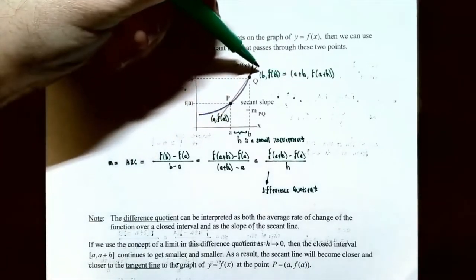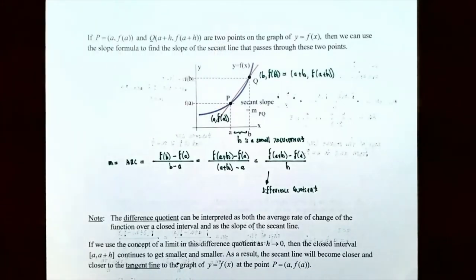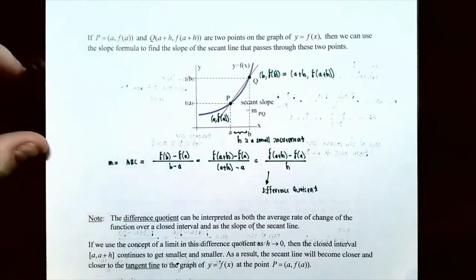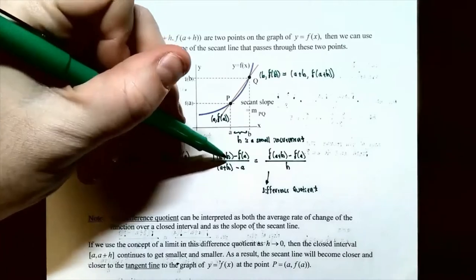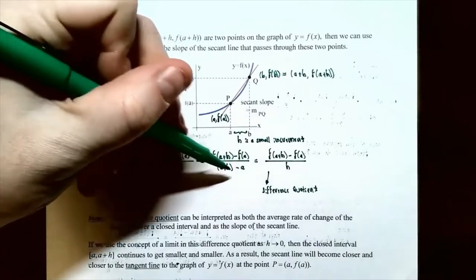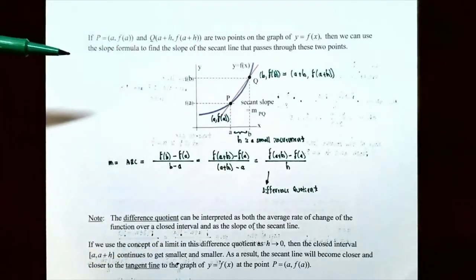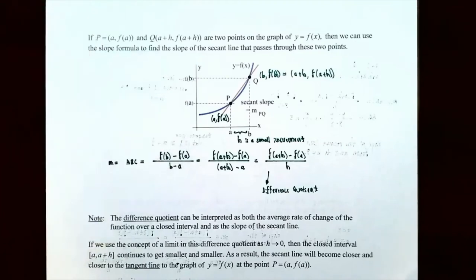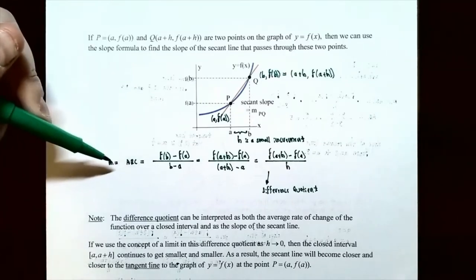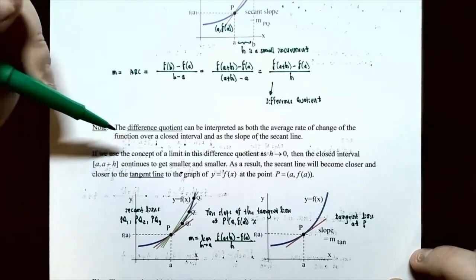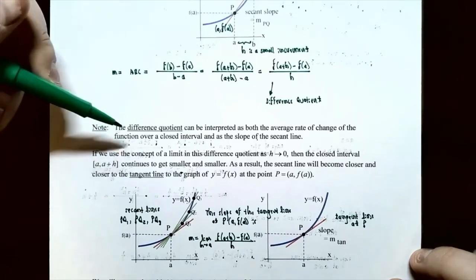You connect the two points P, which is (A, F(A)), and Q, which is (A+H, F(A+H)), with a straight line — that's called the secant line. The slope, or average rate of change, is F(B) − F(A) divided by B − A. Since we're calling B = A + H, it becomes F(A+H) − F(A) divided by (A+H) − A. The A's cancel in the denominator, leaving H, and the numerator is F(A+H) − F(A). This expression is called the difference quotient: F(A+H) − F(A) all over H, or equivalently F(X+H) − F(X) all over H. It represents both the average rate of change over a closed interval and the slope of the secant line through P and Q.